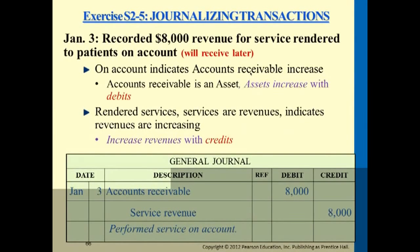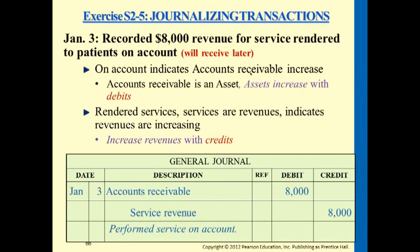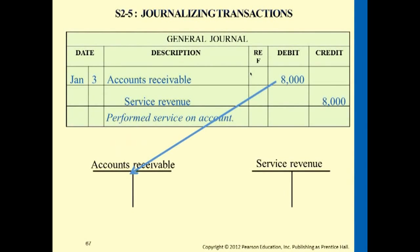For accounts receivable and service revenue: assets increase on the debit side, and revenue increases on the credit side. Open up two accounts — the debit amount goes to the debit side, and the credit amount goes to the credit side.